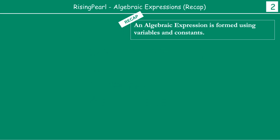Let's do a recap of what is an algebraic expression. We know that an algebraic expression is formed by variables and constants. So we take variables, we take constants, and when we combine them together, we actually get an algebraic expression.